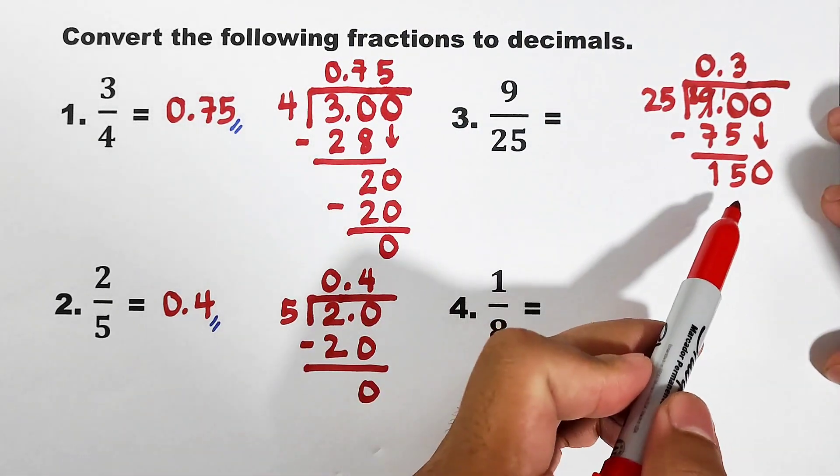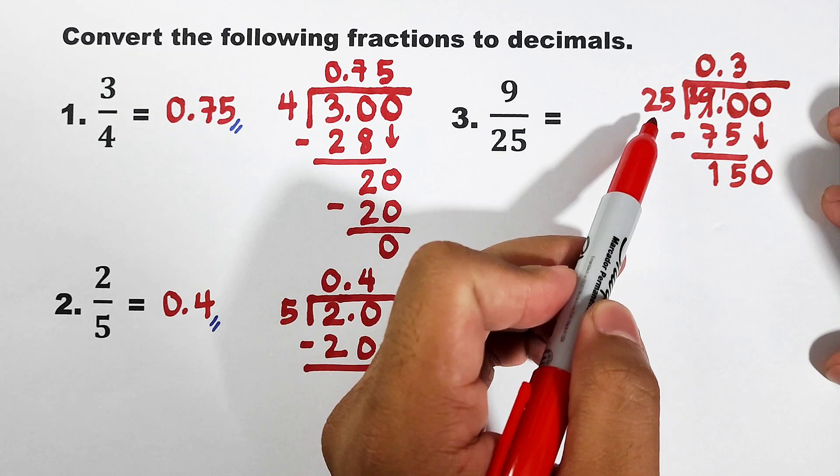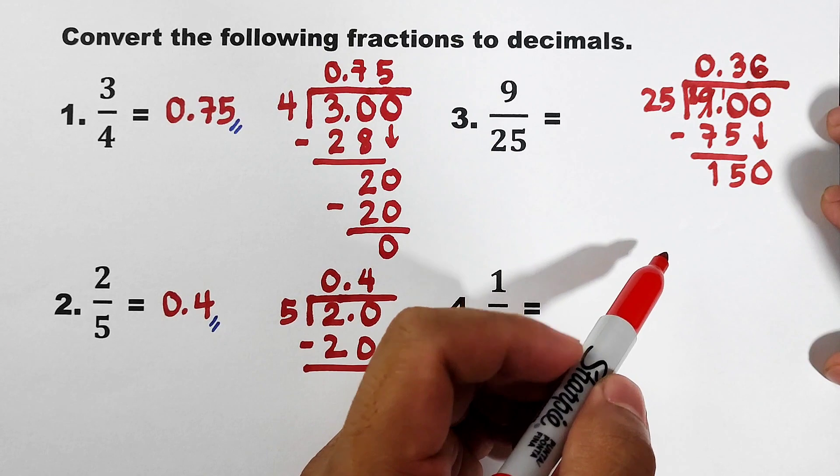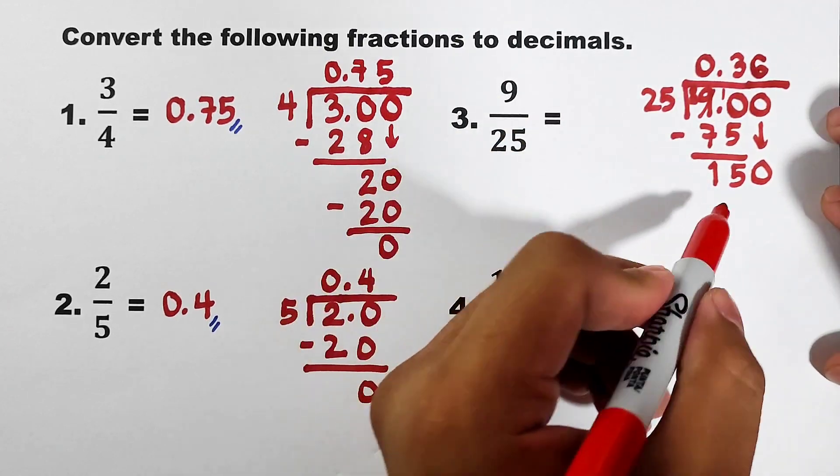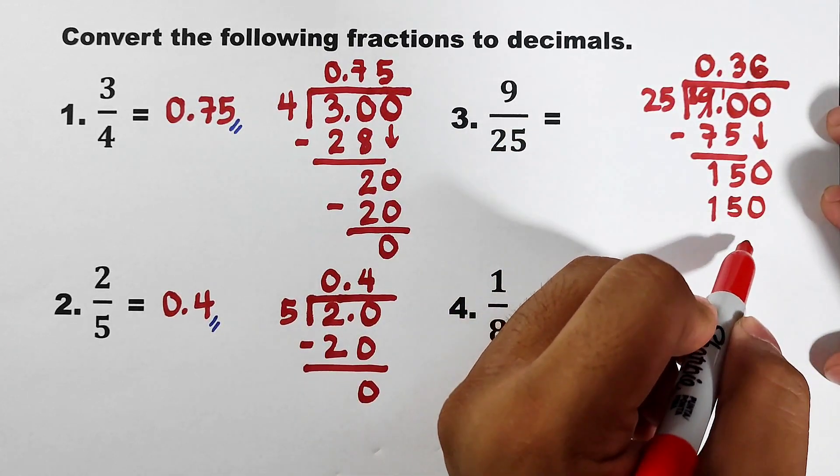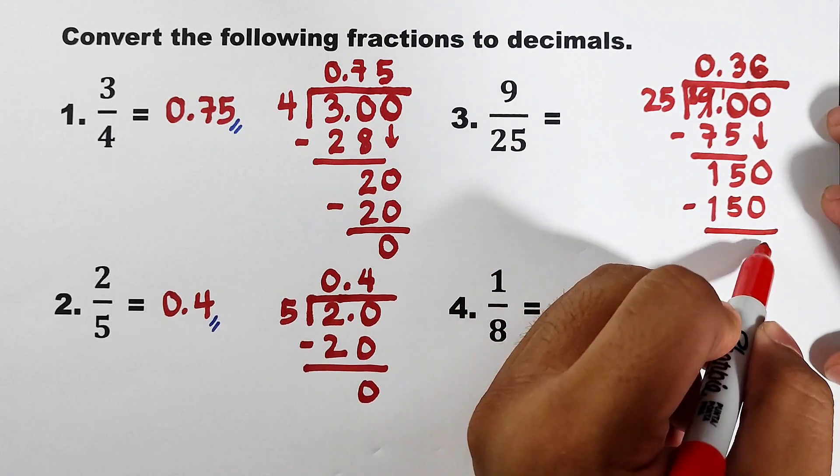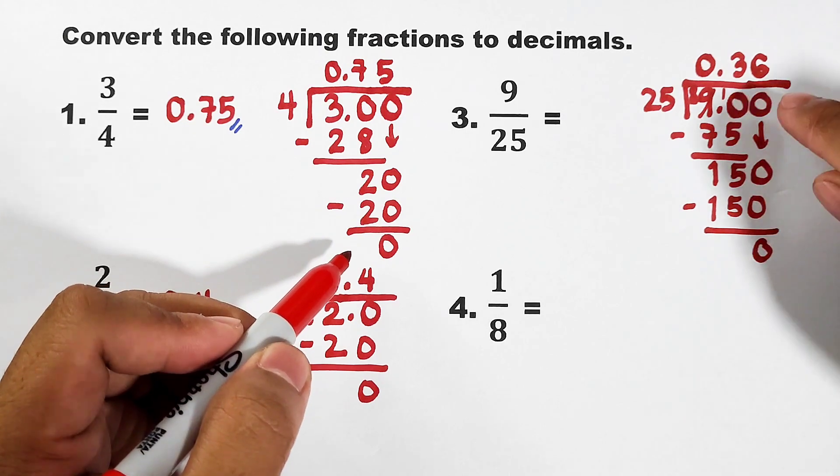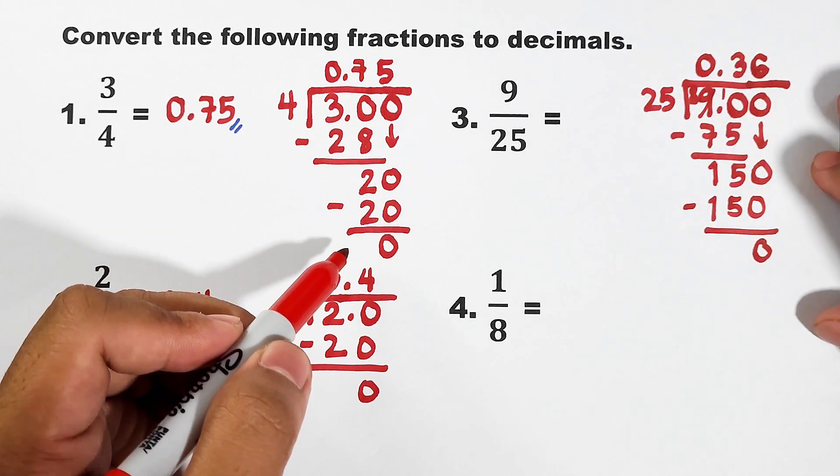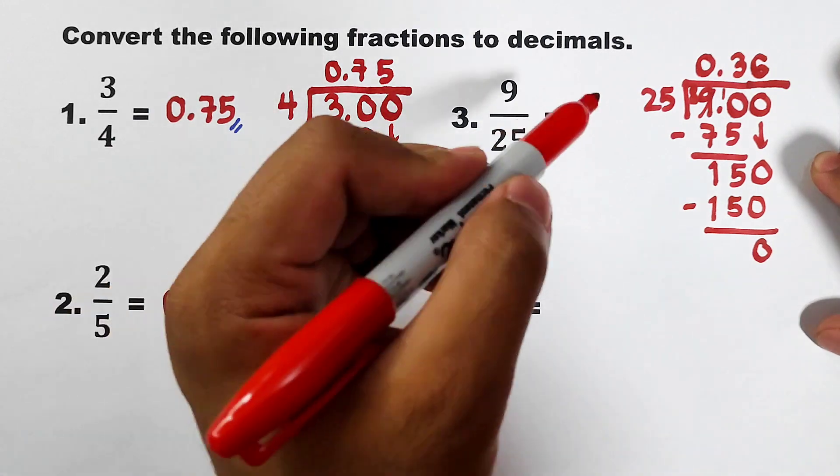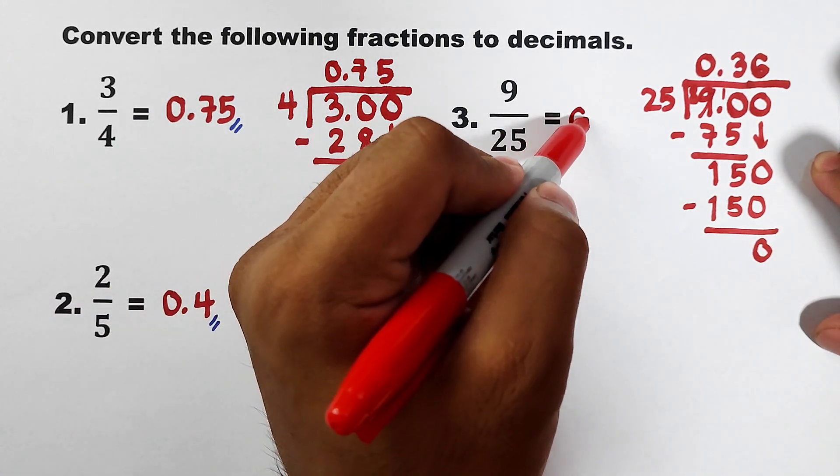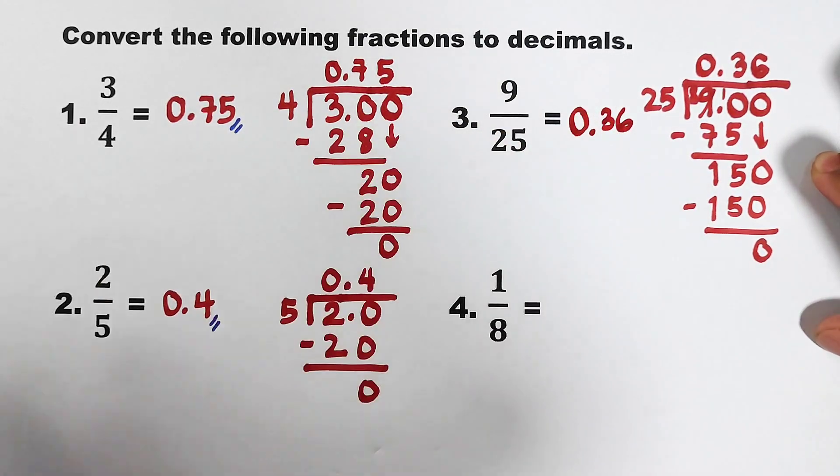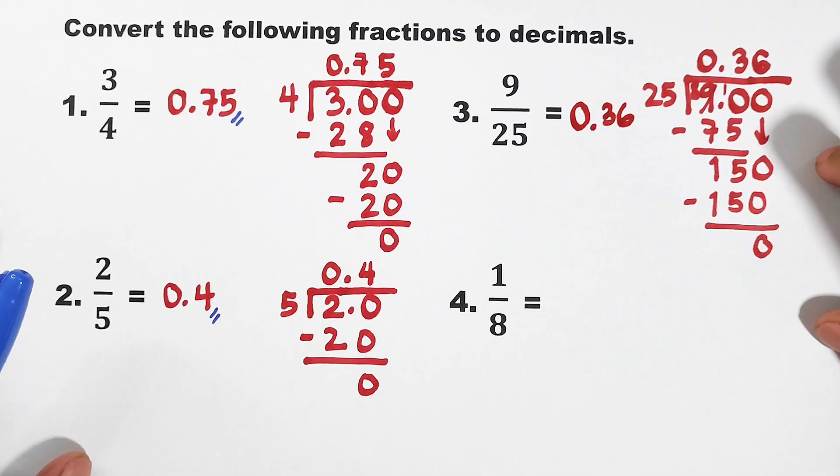So, what we have now is 150 divided by 25. And the answer is 6. 6 times 25 is 150. And as you can see, subtracting this, it will give us the remainder of 0. Meaning, this decimal at the top of your long division is the correct answer. Your 9 over 25 is equal to 0.36 as our decimal.